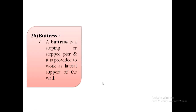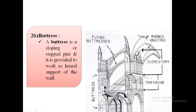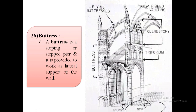The next term is buttress. A buttress is a sloping or stepped pier provided to work as lateral support of the wall. As shown in the image, this is the buttress — it is a stepped pier provided to work as lateral support of the wall.